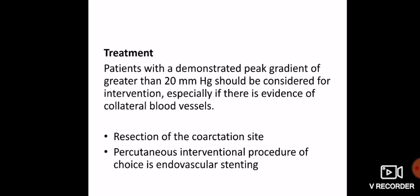Coming to treatment: we will treat when there is a demonstrated peak gradient of more than 20 mmHg — that should be considered for intervention, especially if there is evidence of collateral blood flow. Interventions include resection at the coarctation site via open surgery, or percutaneous intervention — endovascular stenting.